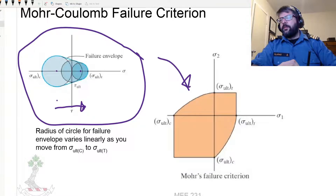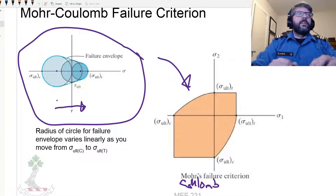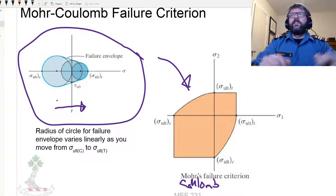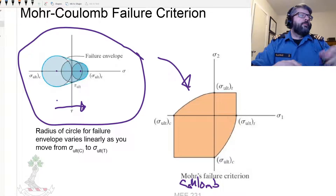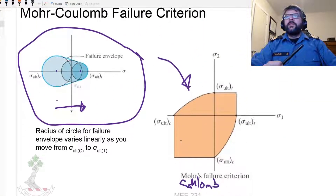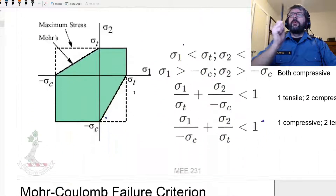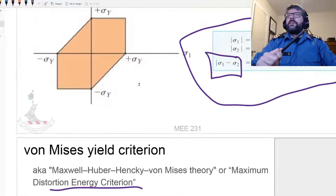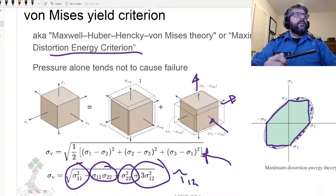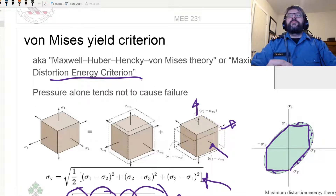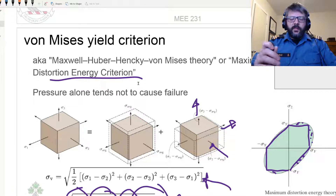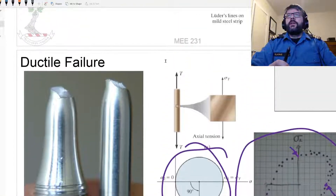I should say Mohr-Coulomb — the textbook kind of skipped the actual Mohr criterion and went straight to Mohr-Coulomb without crediting Coulomb. Anyway, those are basically the five failure criteria: Rankine, Mohr, and Mohr-Coulomb for brittle materials; Tresca and Von Mises for ductile materials.